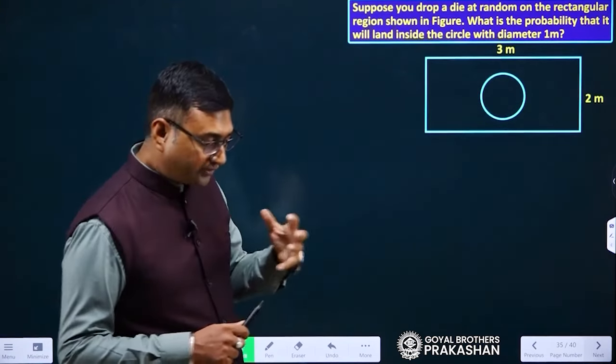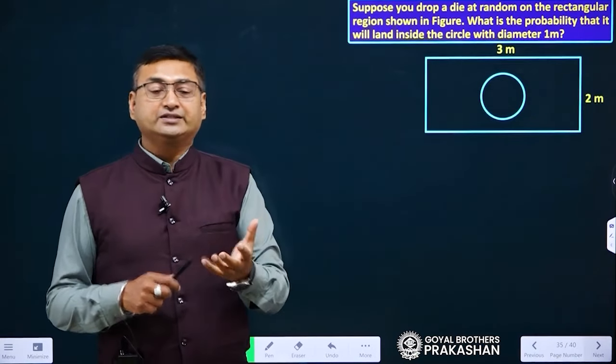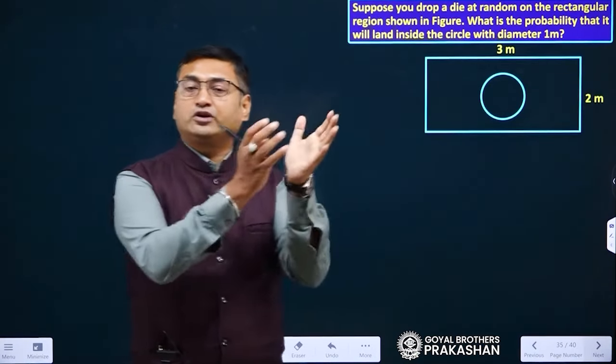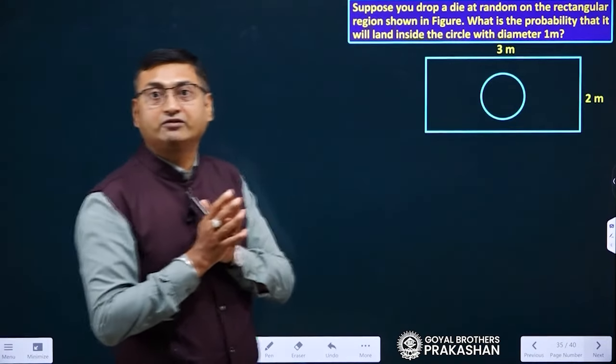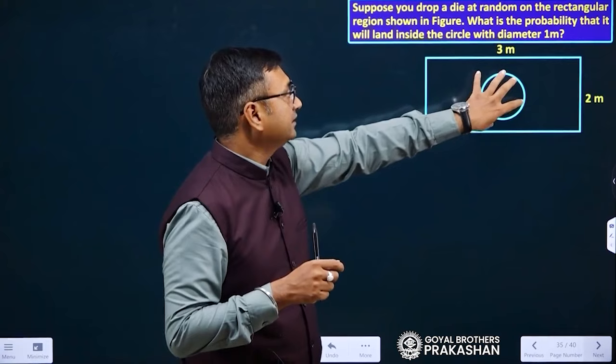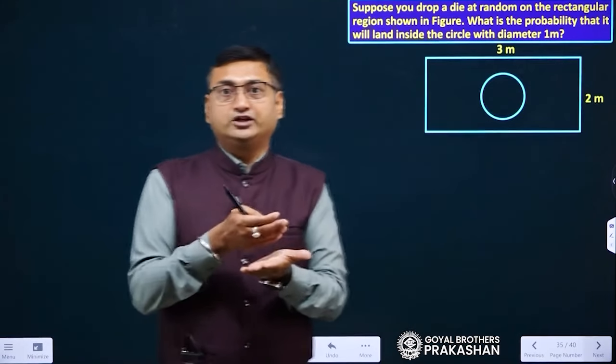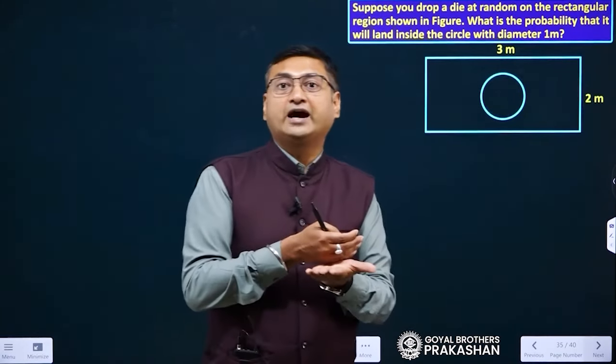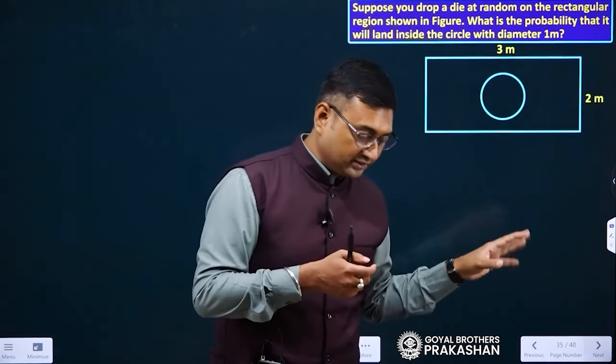We have to find out the probability and the formula for probability is number of favorable outcomes upon total number of outcomes. Now here our favorable outcome is the area of the circle and total outcome is area of rectangle. We will put the values and we will get the answer. First of all, we have to find out the area of circle and the area of rectangle.